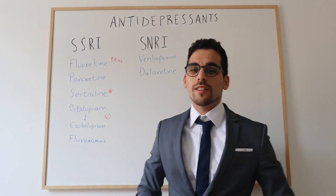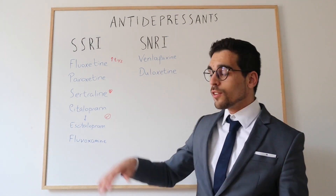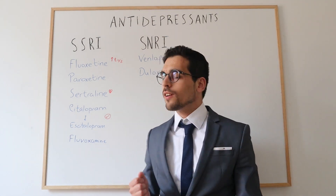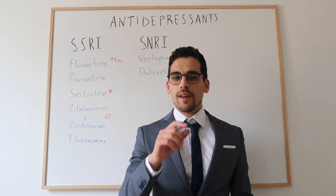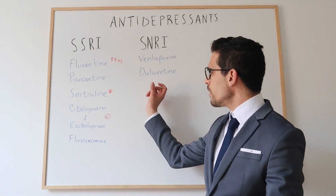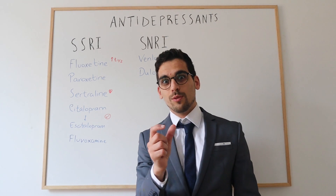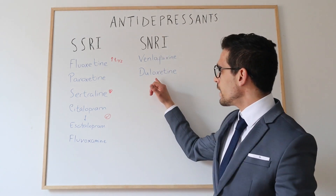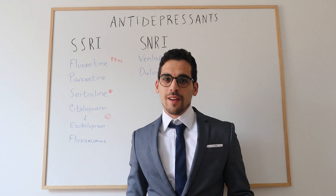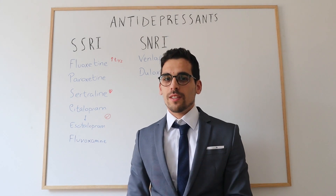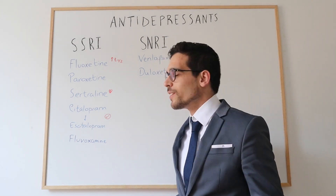The second SNRI is duloxetine. In addition to its indication for depression, it can also be used for pain. If you think about it, duloxetine starts with 'dul', which you can associate with pain — and indeed its indications include neuropathic pain and also stress urinary incontinence.